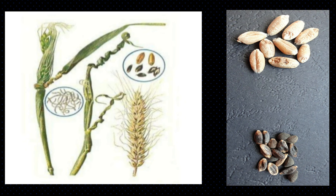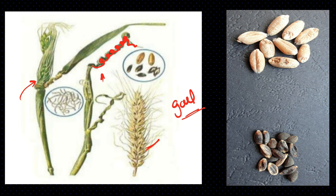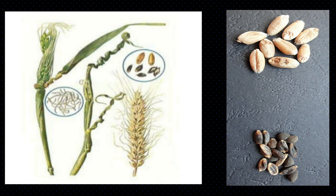This disease is caused by a nematode. When nematode infects leaves, twisting and curling occur. When ears are infected, awns curl and galls form — cells swell up. In severe infection, seeds do not form; instead, seed galls develop containing many nematode eggs and larvae. These are called seed galls or seed cockles.